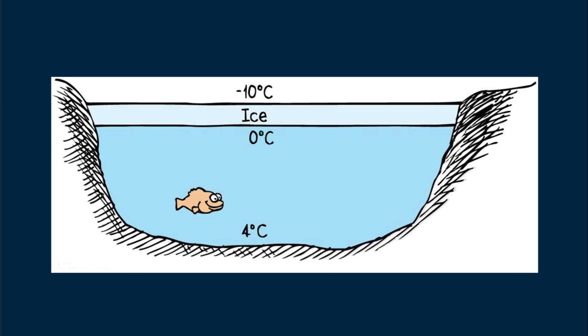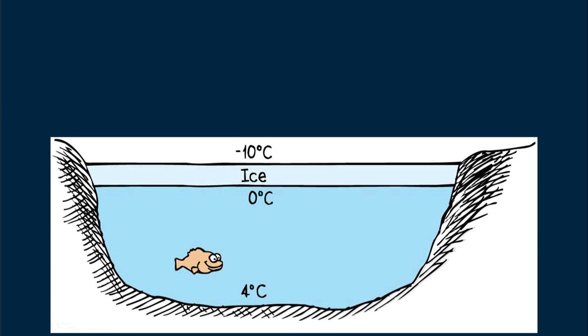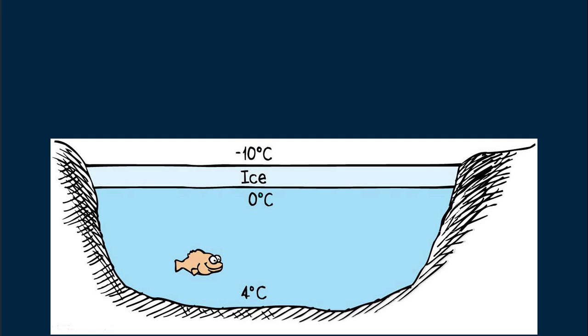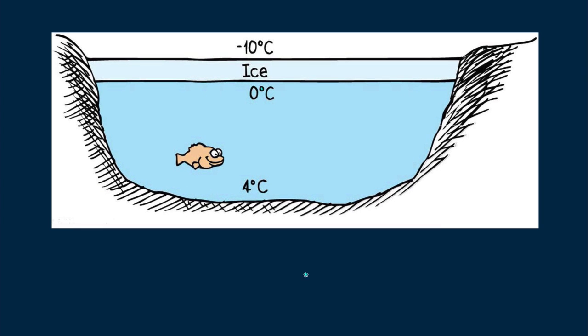So ice doesn't form on bodies of water unless all the water is cooled to four degrees Celsius. Only then can lower temperatures of water remain on the surface to undergo freezing. Fish are glad that this is so. I want to leave you with a question. What was the temperature at the bottom of Lake Michigan on New Year's Eve last year? Until next time, good energy!